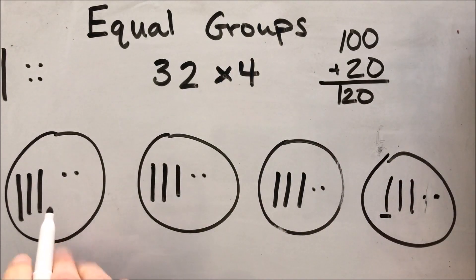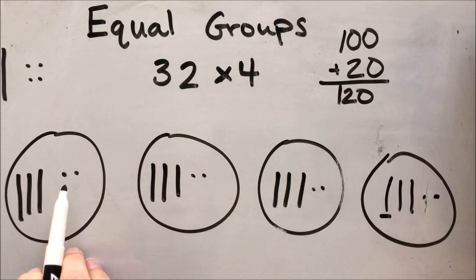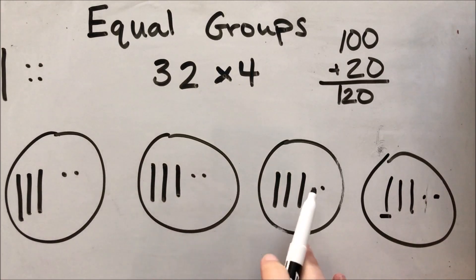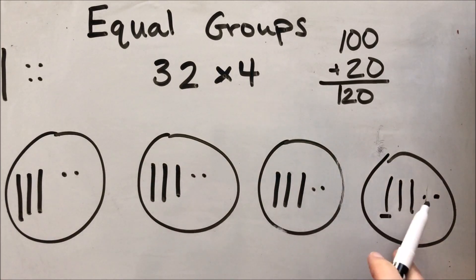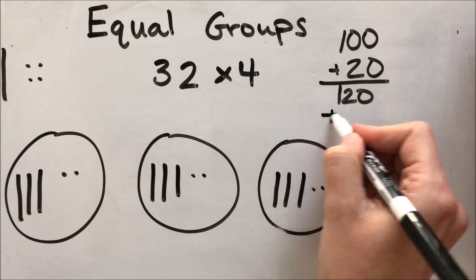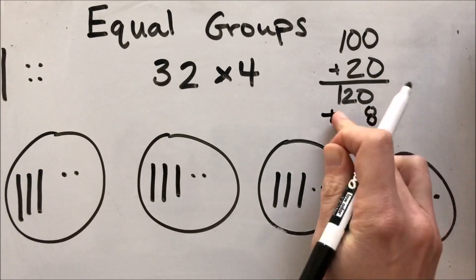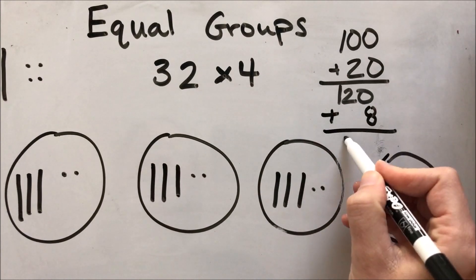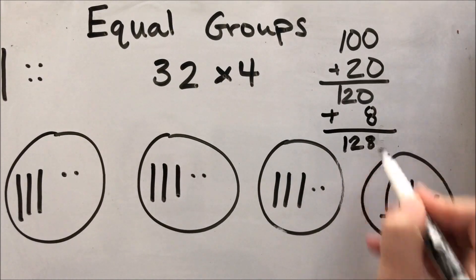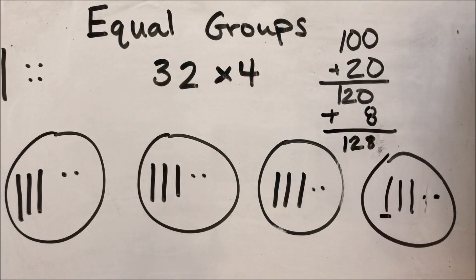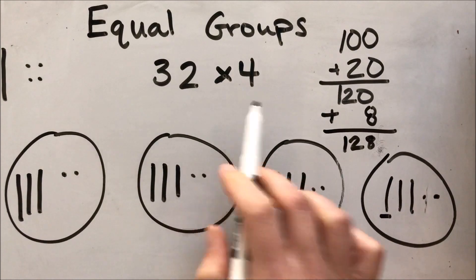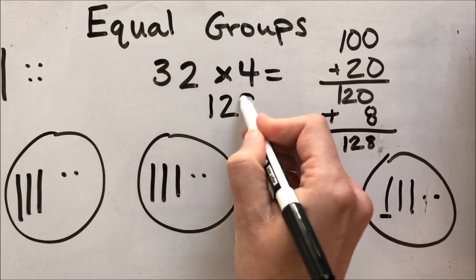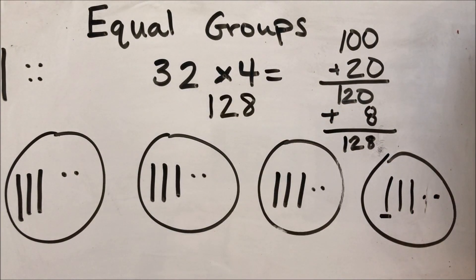Then I'm going to count up my ones blocks. These are ones, so I count by 1: 1, 2, 3, 4, 5, 6, 7, 8. I'm going to line this up in my ones place, not in my hundreds and not in my tens. And I'm going to get my product is 128. 32 times 4 equals 128. That's one strategy — let's try another.